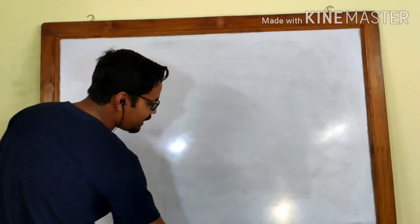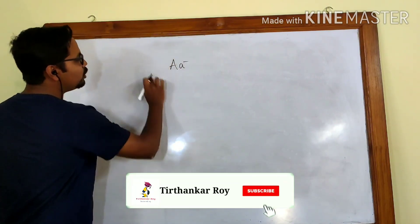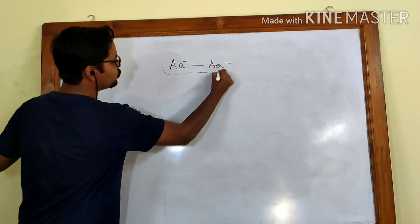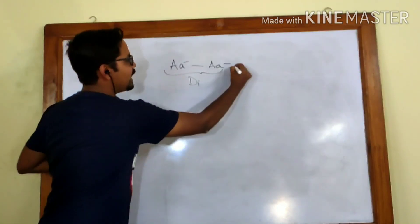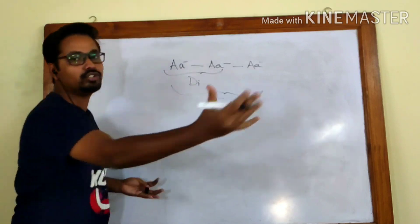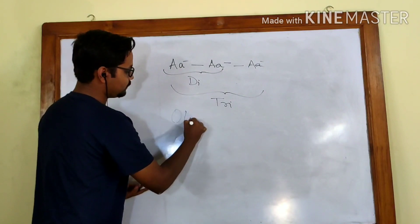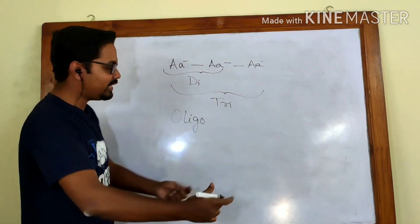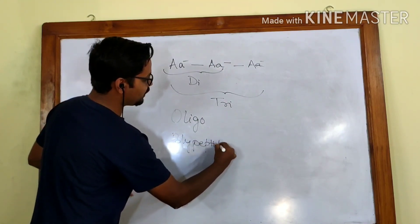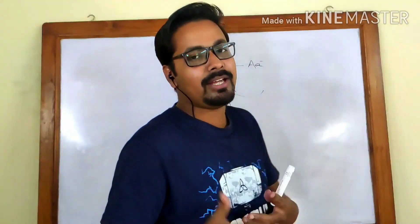Peptides are a combination of amino acids. If we have one single amino acid, it is called a monopeptide. If we have two bonded together, it is a dipeptide. Three gives us a tripeptide, and so on up to twelve, which is called an oligopeptide. If it is above twelve, it is called a polypeptide. These names are based on the number of amino acids bonded together — that is how peptide nomenclature is done.